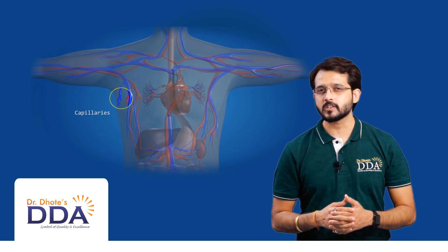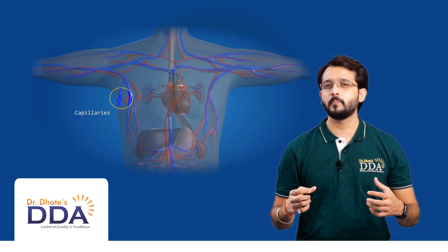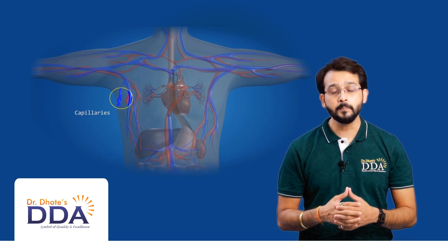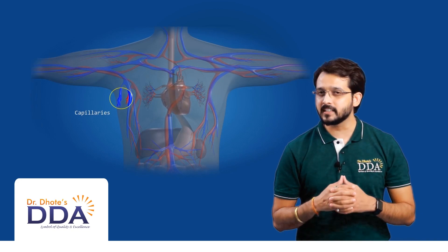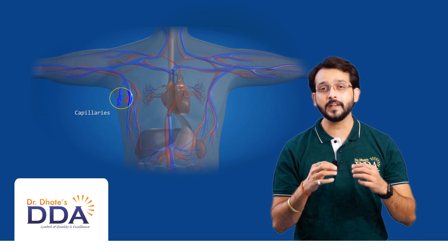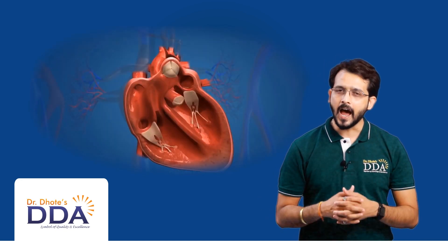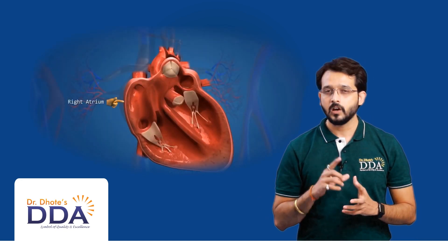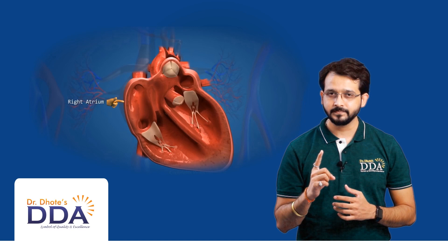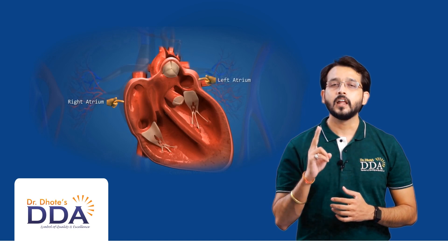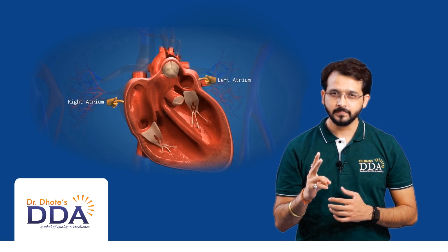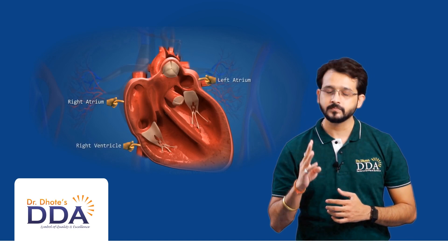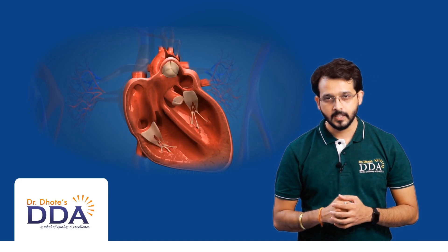If you stretch out all your blood vessels, they would be 96,000 km long. The heart has four chambers: right atrium, left atrium, right ventricle, and left ventricle.